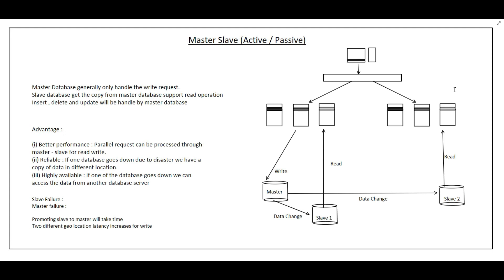Let's talk about master-slave, also called active-passive architecture. In this architecture we have a master DB, which is the primary DB, and multiple slaves, which are replica DBs. All write, update, and delete operations are handled by the master, and all read requests are served by the slaves.